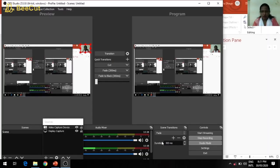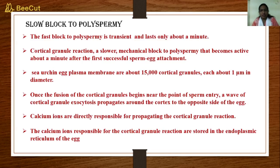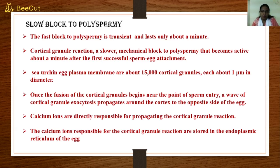The fast block to polyspermy is transient and lasts only about a minute, meaning the plasma membrane of the egg will return to its resting membrane potential of minus 70 millivolts. If any sperms are in close vicinity of the egg, they again have a chance to interact with it, resulting in polyspermy. To avoid this, sea urchin eggs have evolved a mechanical block known as the cortical granule reaction.